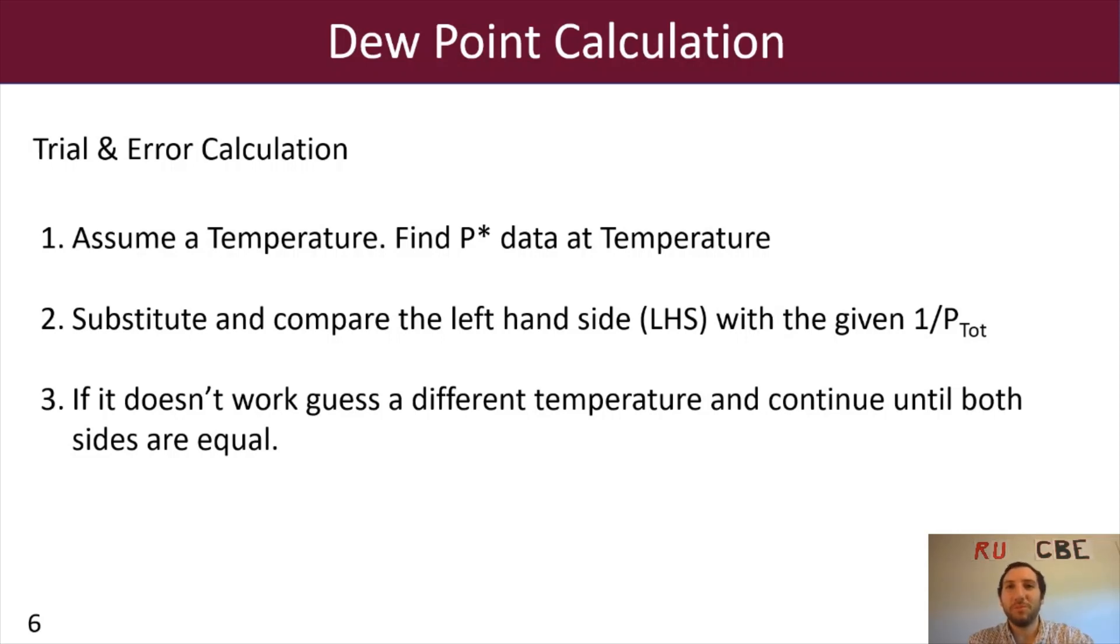Now, what I hope you start to recognize right now is that if you have to do this by hand, you have to recalculate 3 P stars every time you guess a temperature. And so every time you guess a temperature, you might get the correct value. Because of that constant iterative calculation and the fact that you have to do a lot of this calculation by hand, it makes a lot of sense to use something like GoalSeek to do all the work for you. Because now you don't have to do all these calculations. GoalSeek is going to figure it all out.